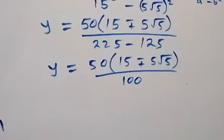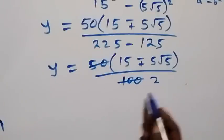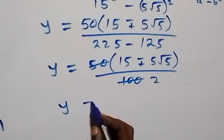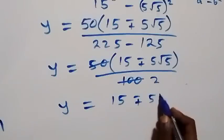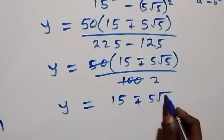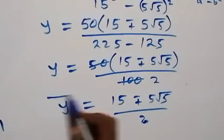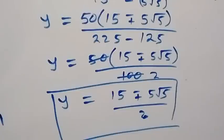Simplifying: 50 divides into 100 giving 2, so y = (15 ∓ 5√5) / 2. Therefore we have two values of y as well, completing the solution.